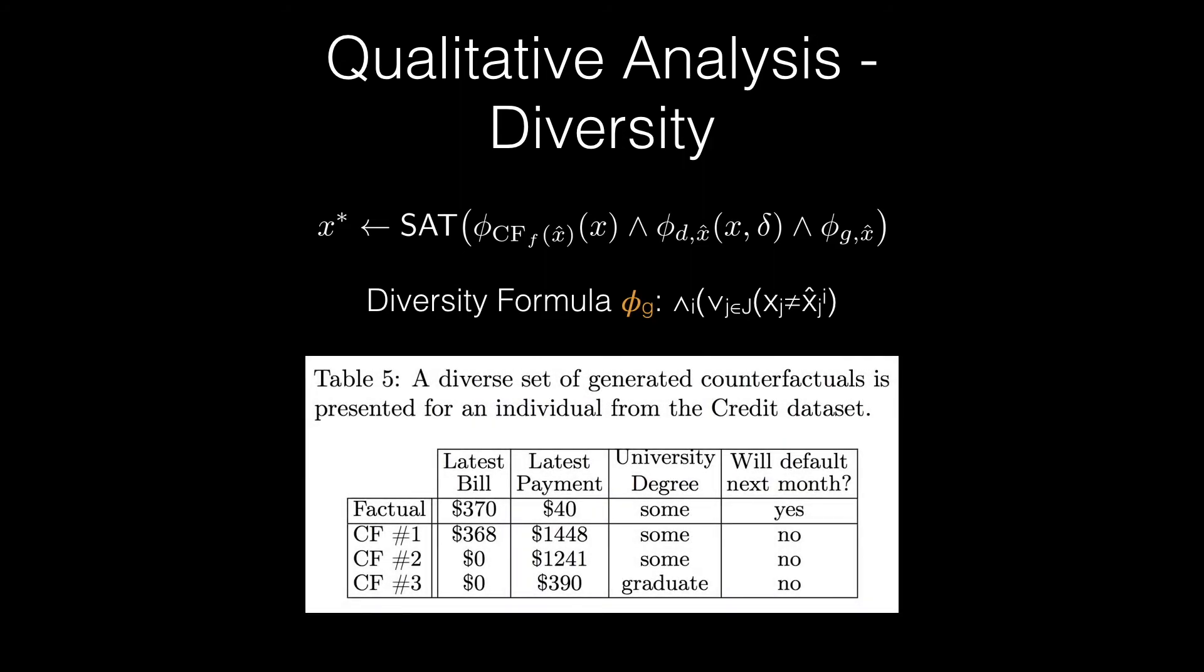Finally, we present a situation where MACE can be used to generate counterfactuals under both plausibility and diversity constraints. In this case, we consider a loan borrower from the credit dataset identified with the following features. John is a married male between the age of 40 and 59, and he has some university degree, which is unclear.